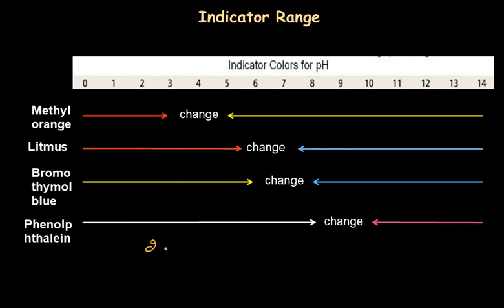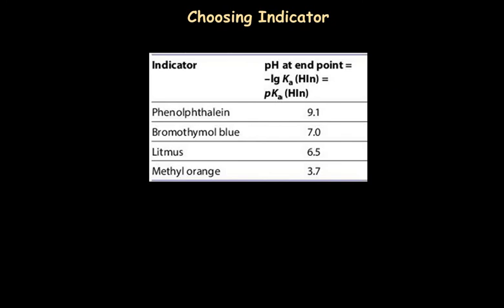Each indicator has approximately a range of 2 pH units in which it shows a color change, but all indicators have one exact pH at which they show an end point. If you look at the exact end points of a few indicators shown here, you can pause the video to review them. Knowing the pH range for each indicator is very important because accordingly we choose our indicator for a particular titration.